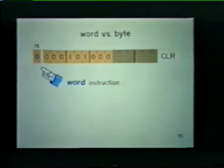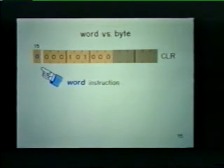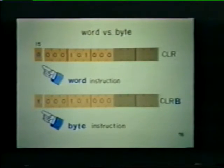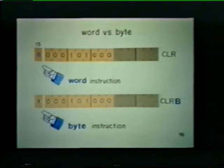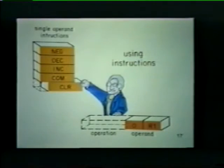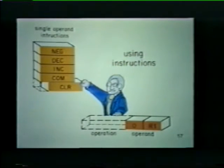What is the difference between a word and a byte instruction? If we use a clear instruction and place a 0 in bit 15, that indicates a word instruction, and in the assembler we would type the mnemonic CLR. However, if we place a 1 in bit position 15, it indicates that the clear instruction is to operate on a byte rather than a full word. In that case we use the assembler mnemonic CLRB. Now that we understand the format of single operand instructions, let's start putting these instructions together to do certain jobs and look at the individual instructions in the single operand group.